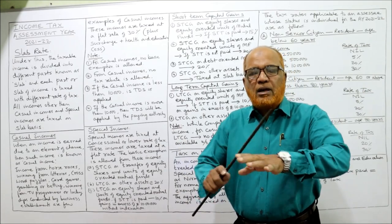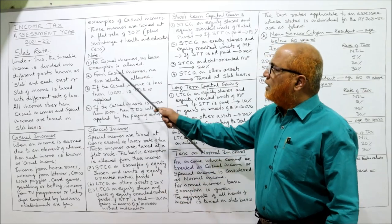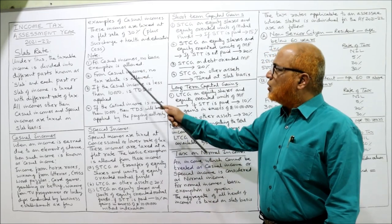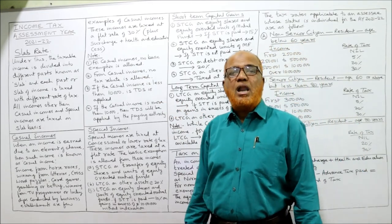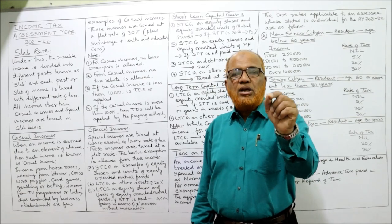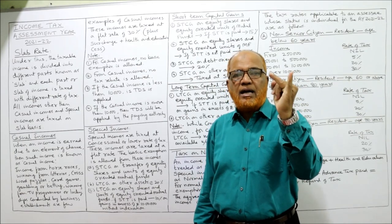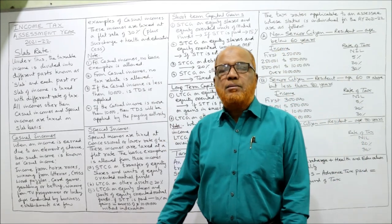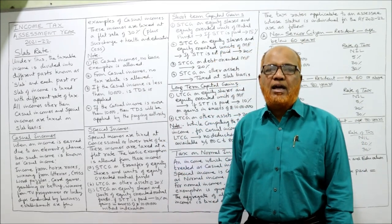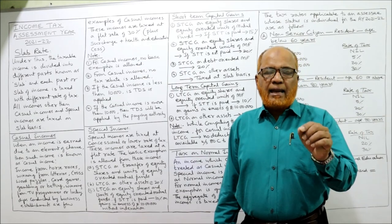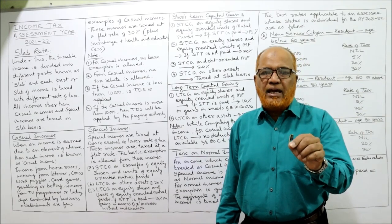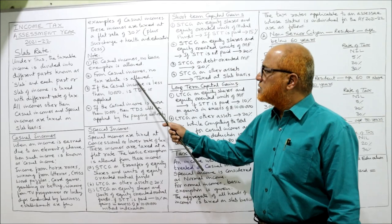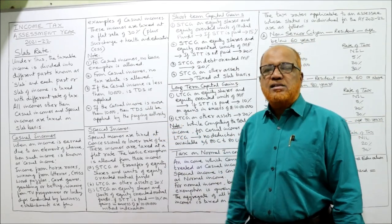Important notes regarding casual income: First, for casual incomes no basic exemption is allowed. Basic exemption is allowed only for normal income and special incomes — not for casual incomes. Second, for casual incomes no tax rebate under Section 87A. For calculating the tax rebate under Section 87A, casual income should not be considered; the rebate cannot be deducted from casual income tax. Third, if casual income is less than ₹10,000, no TDS is applied.